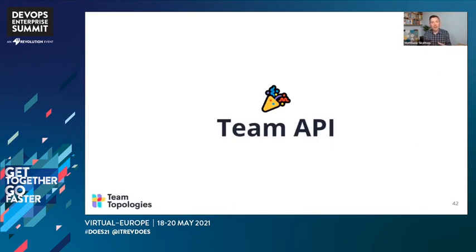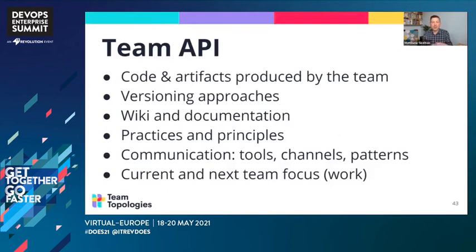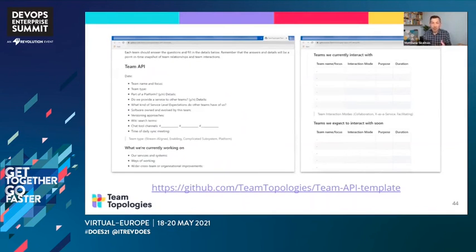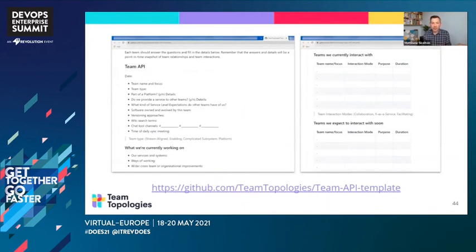The Team API is a concept we discuss in the Team Topologies book. As a quick reminder, it's a description of everything that the team does from the perspective of outside the team — describing code and artifacts provided by the team, how they work, practices, principles, communication channels, and what their current and next focus is, to help other groups in the organization interact. We're taking an engineering concept like API and applying it to a human group, the team. We have a template on our GitHub repository.